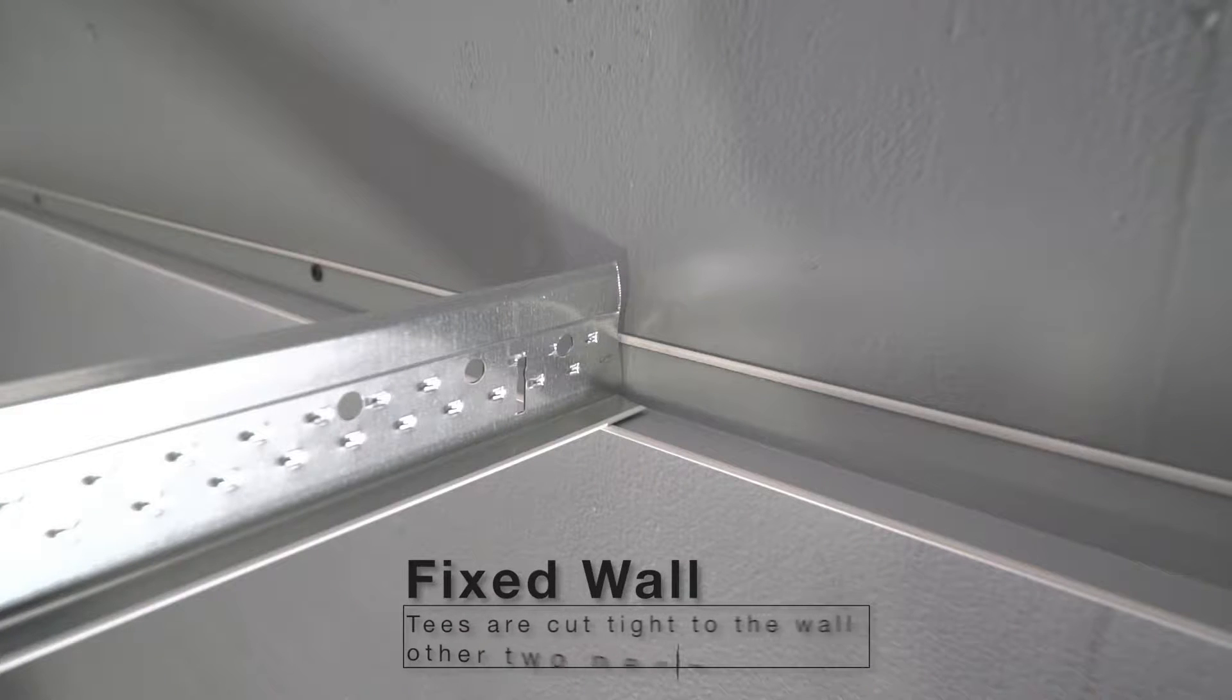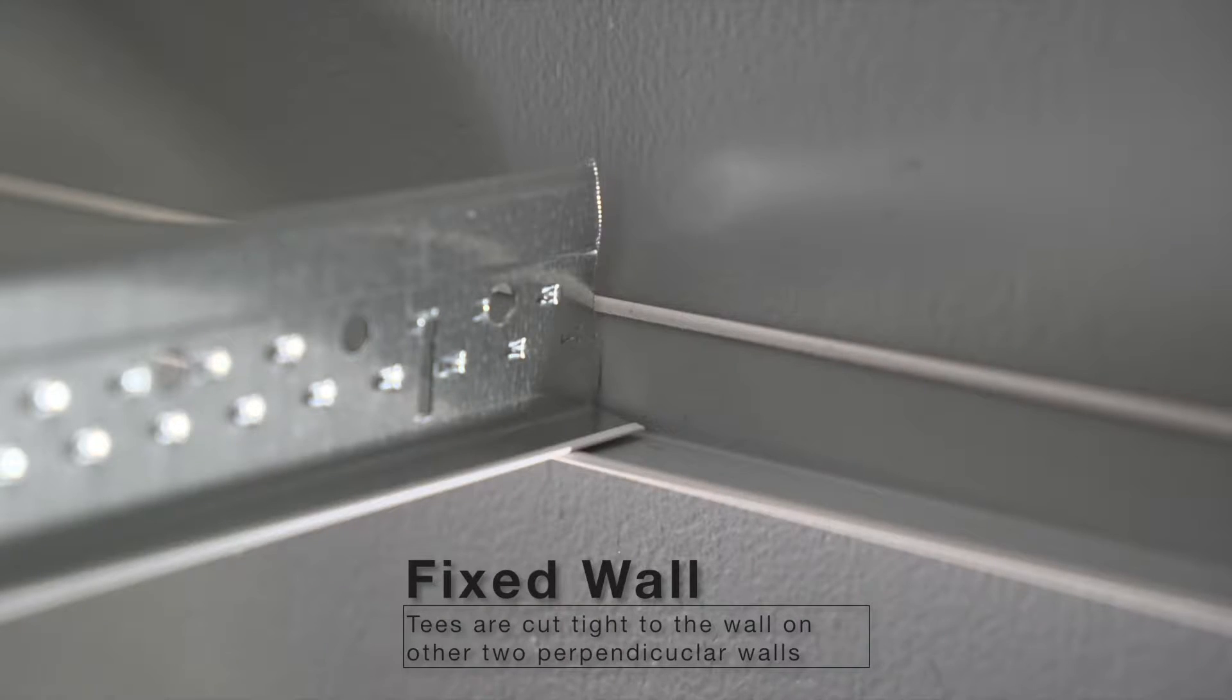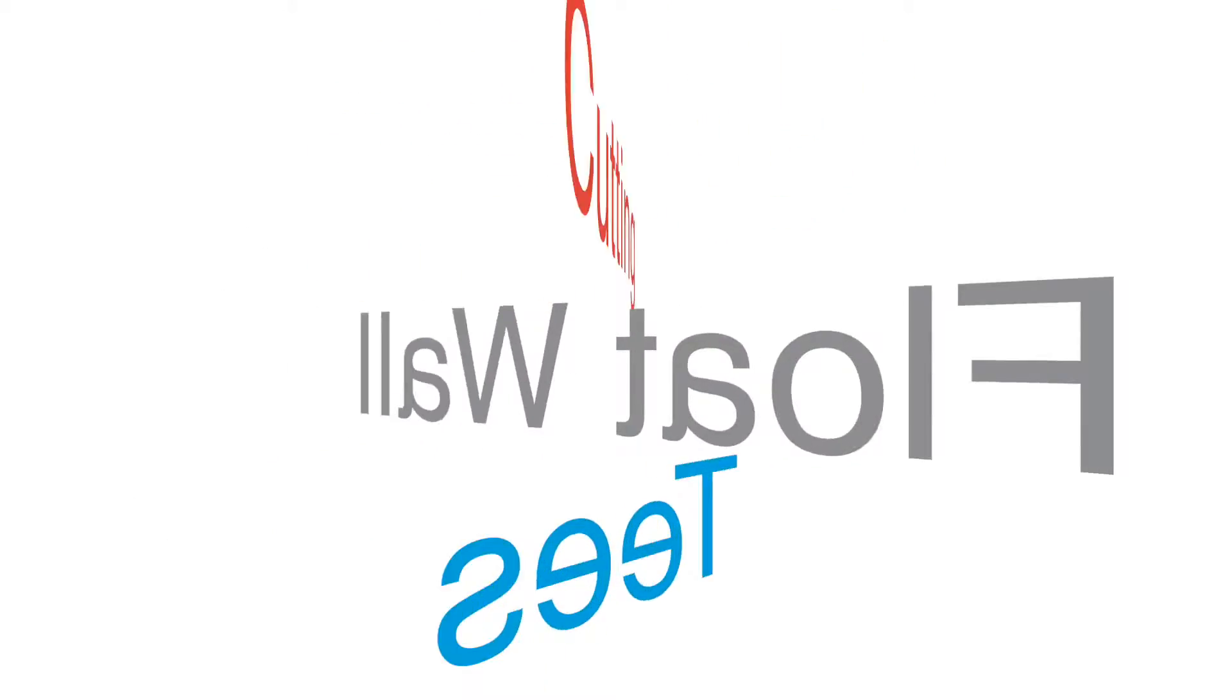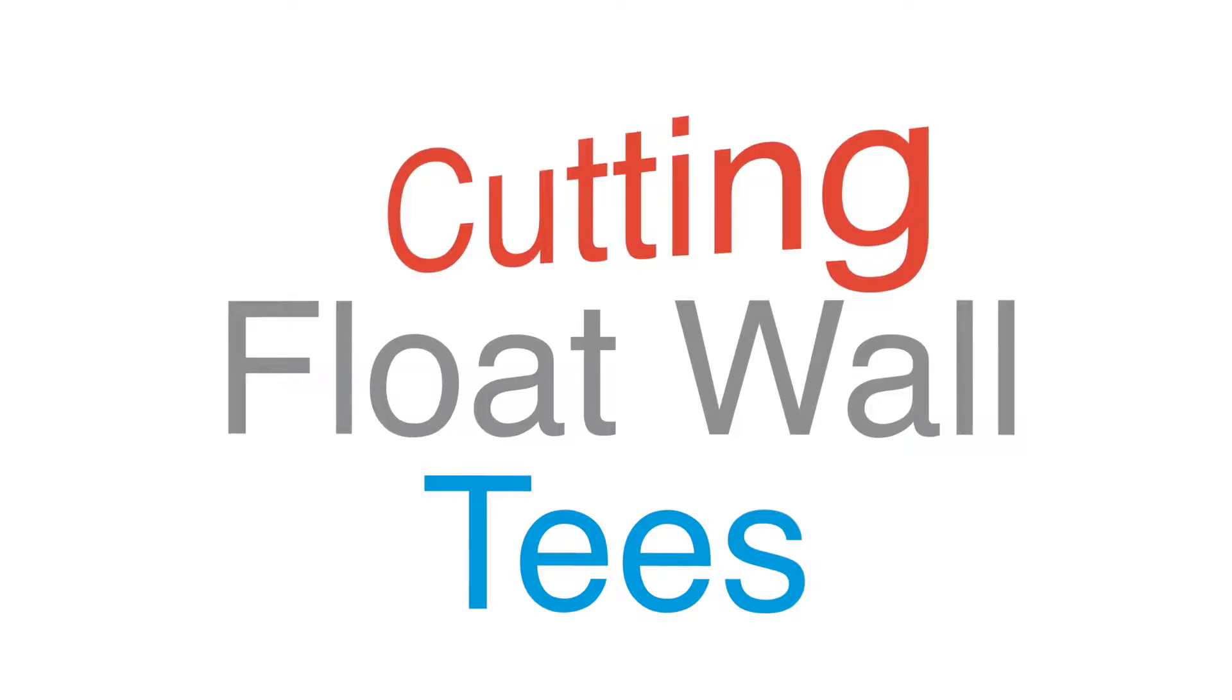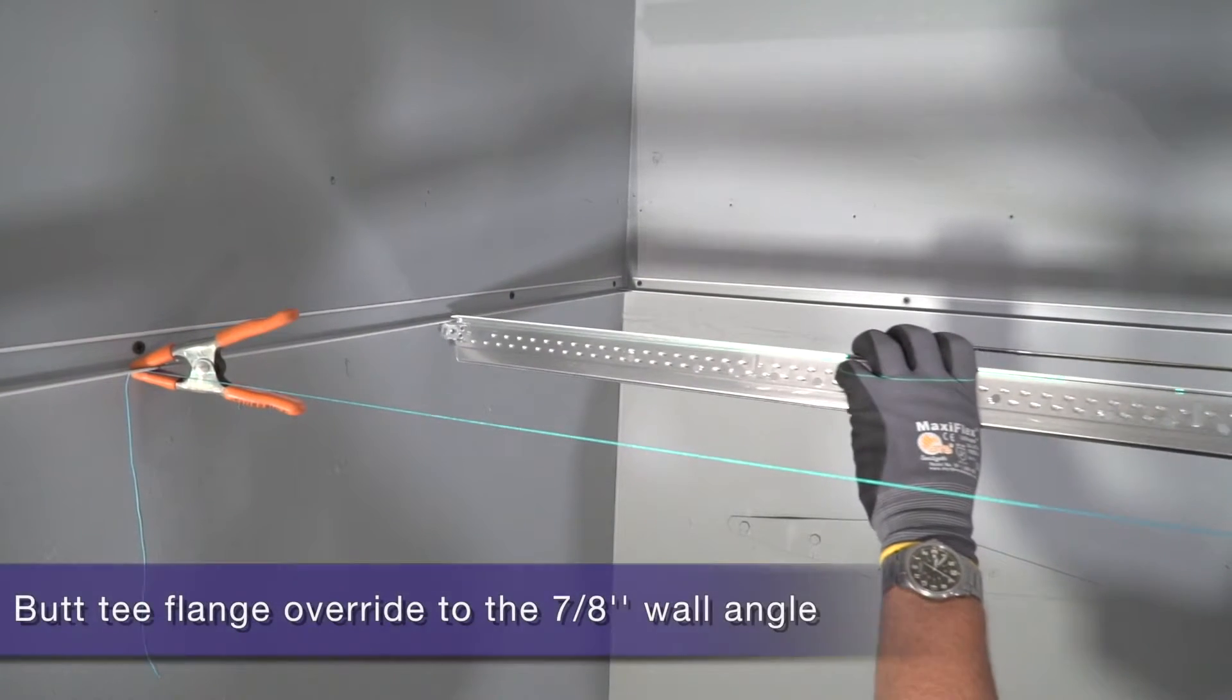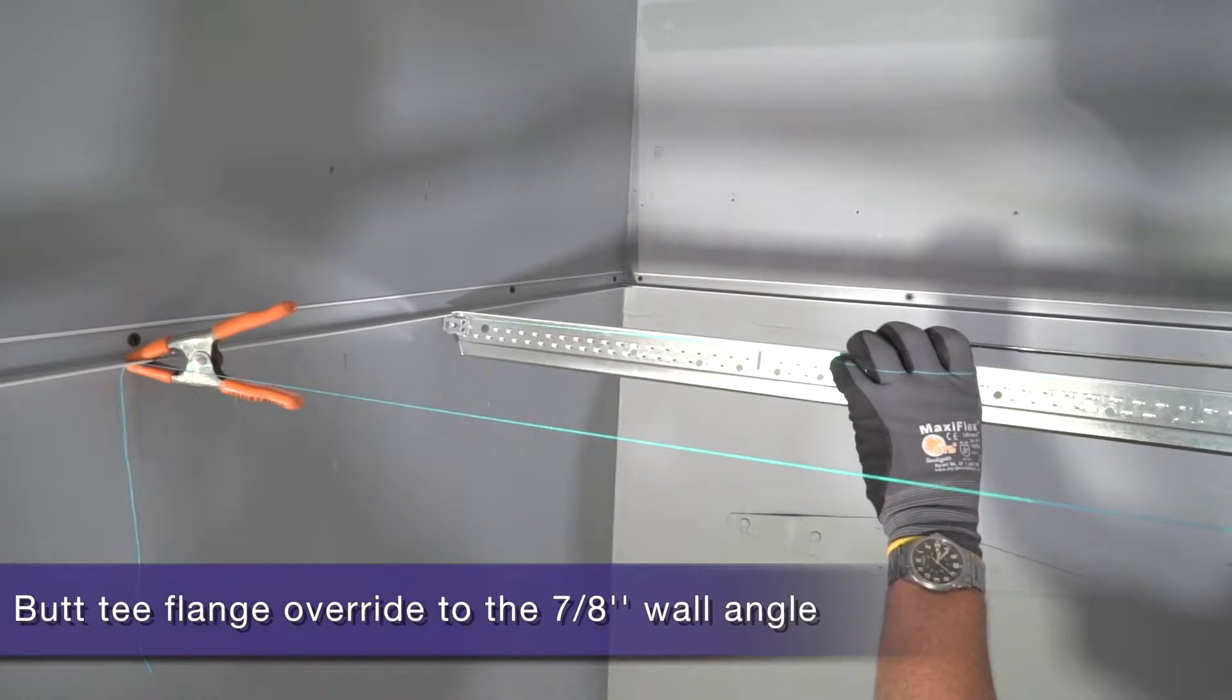For your two perpendicular fixed walls, your tees will be cut tight to the wall regardless of angle width. On float walls, how do you cut border tees precisely to the required tee length?